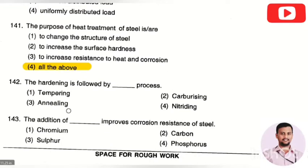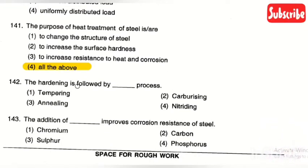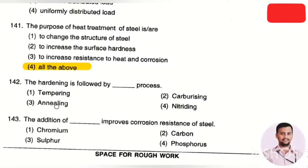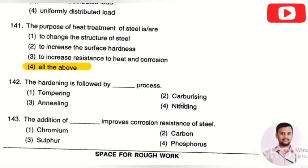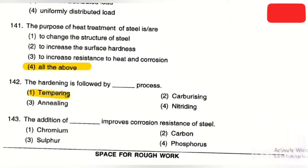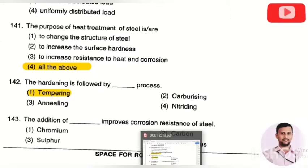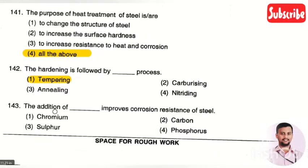The next question: hardening is followed by which process — option 1: tempering, option 2: carburizing, option 3: annealing, option 4: nitriding. The right answer is option 1, tempering. After the tempering process, the hardening process is done.